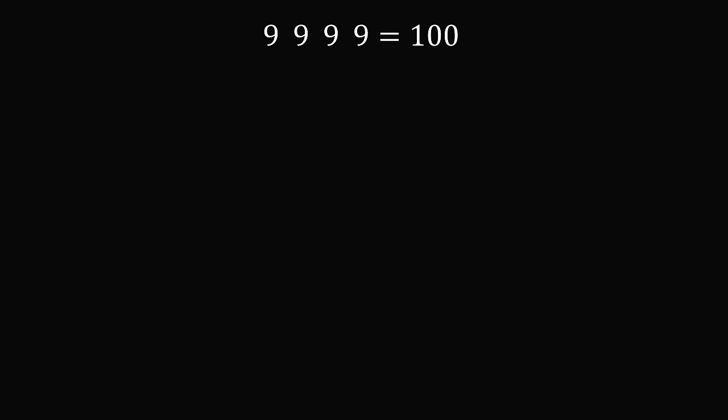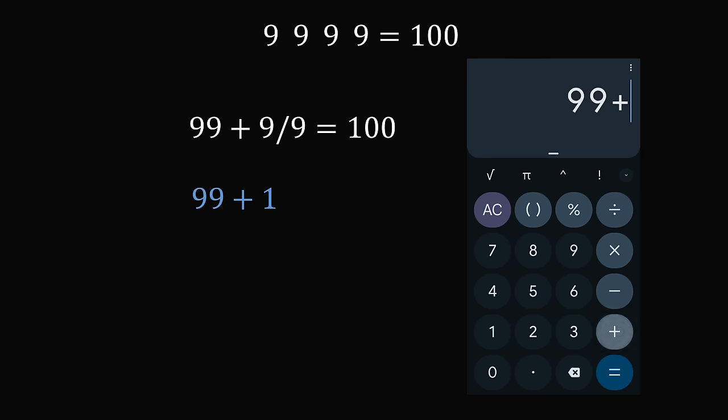When I saw this puzzle online, the solution presented was 99 plus 9 over 9 equals 100. The trick is that you're using four nines but combining two of them into one number, 99. It feels a little like cheating, but it's within the rules. 9 over 9 equals 1, so we have 99 plus 1 equals 100. So this is one way to get the answer.